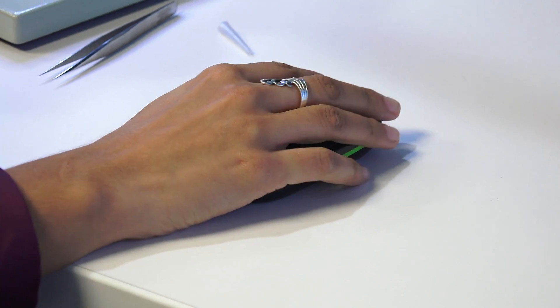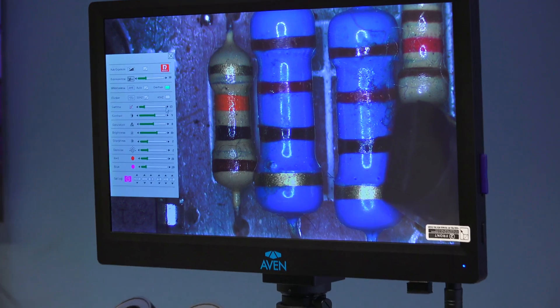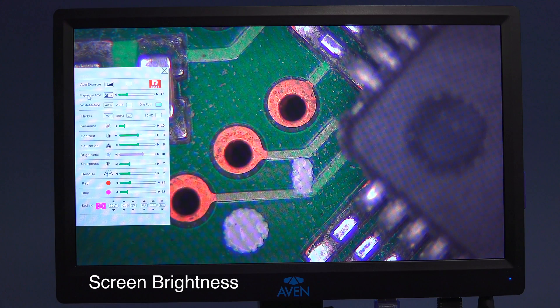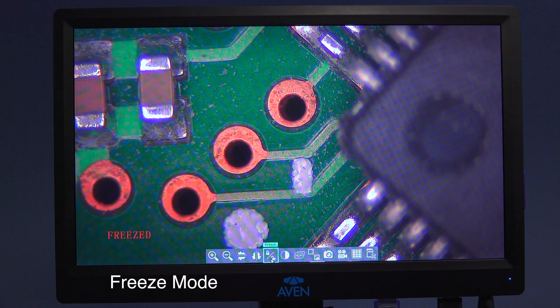Using the included wireless mouse, MightyCam Eidos permits users to control on-screen features such as digital zoom, grid overlays, image sharpness, screen brightness, white balance, as well as compare, freeze and mirror modes.